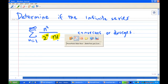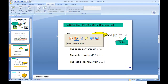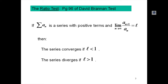Let's revise the statement of the ratio test. The ratio test says that if you have an infinite series with positive terms — meaning all terms are greater than zero — and the limit of aₙ₊₁ over aₙ equals L, which you can find on page 96 of the dependent text, then the series will converge if L < 1, diverge if L > 1, and the test is inconclusive if L = 1.